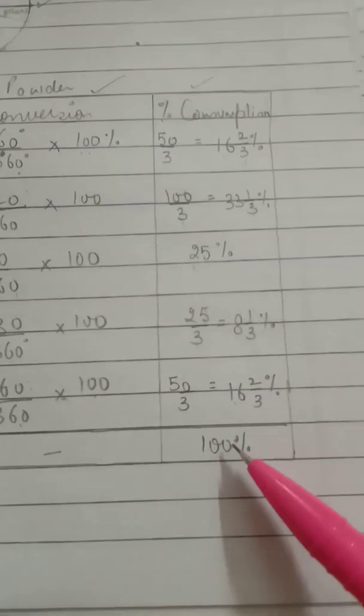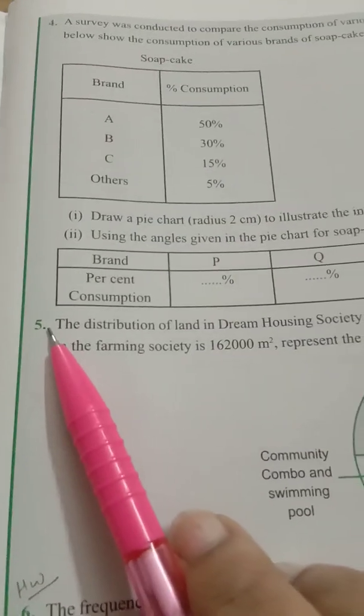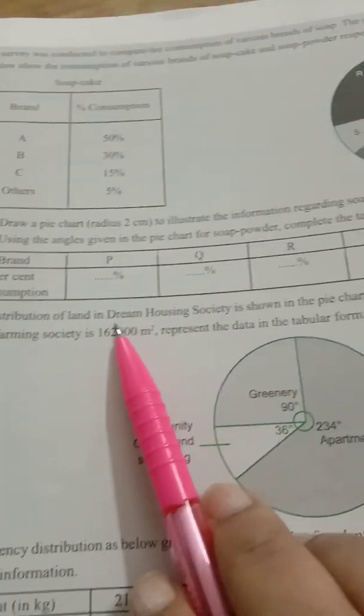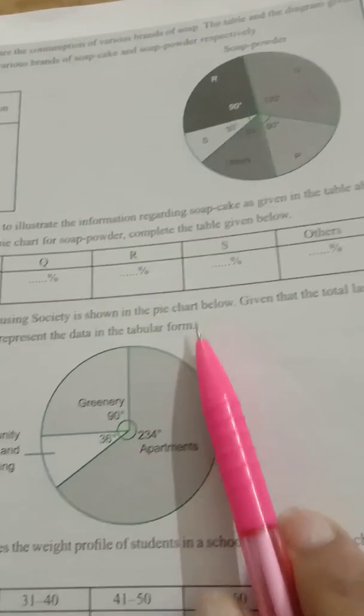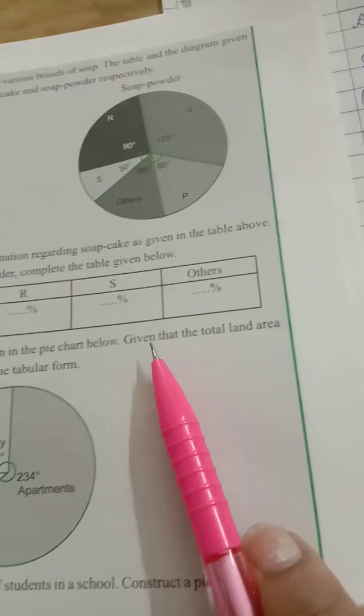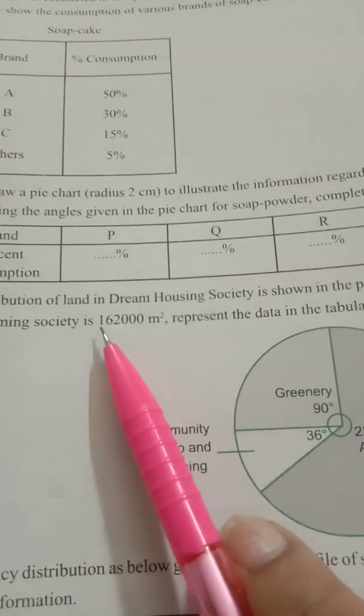Question number five: the distribution of land in Dream Housing Society is given in the pie chart below. Pie graph is already given. Given that the total land area in the housing society is 1 lakh 62,000 meters square, represent the data in the tabular form.